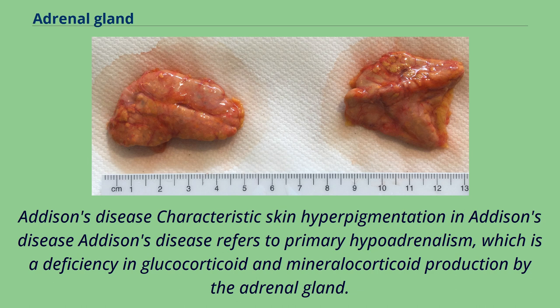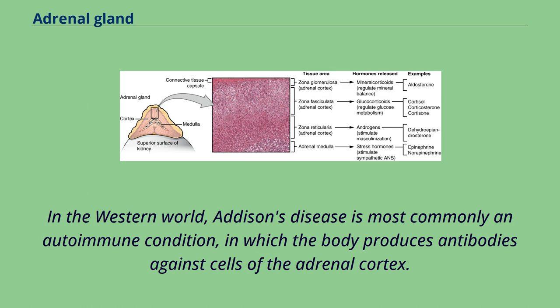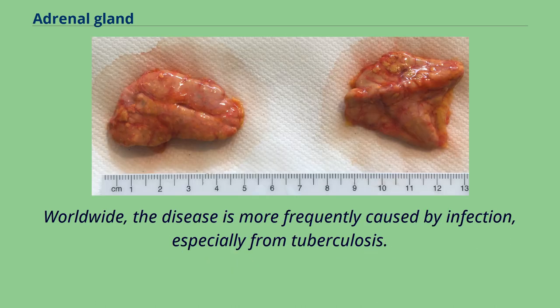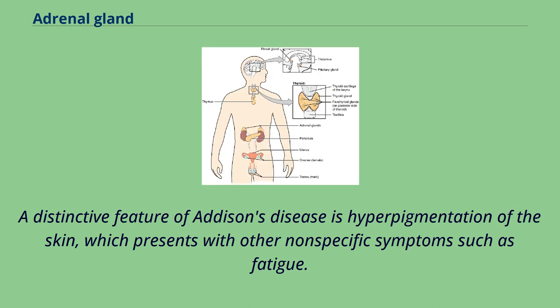Addison's disease refers to primary hypoadrenalism — a deficiency in glucocorticoid and mineralocorticoid production by the adrenal gland. In the Western world, Addison's disease is most commonly an autoimmune condition, in which the body produces antibodies against cells of the adrenal cortex. Worldwide, the disease is more frequently caused by infection, especially from tuberculosis. A distinctive feature of Addison's disease is hyperpigmentation of the skin, which presents with other nonspecific symptoms such as fatigue.